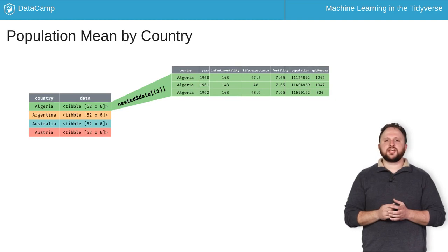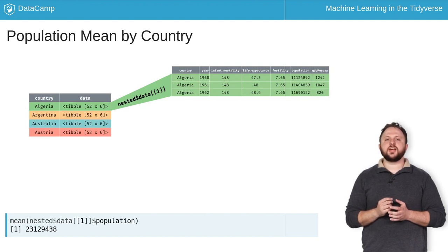In the previous exercise, you calculated the mean population of the country of Algeria by extracting the first element of the nested data frame, then calculating the mean of the population column. The structure of this is very similar when using map. You will use map to calculate the population mean for each country using the corresponding nested data frame of that country.